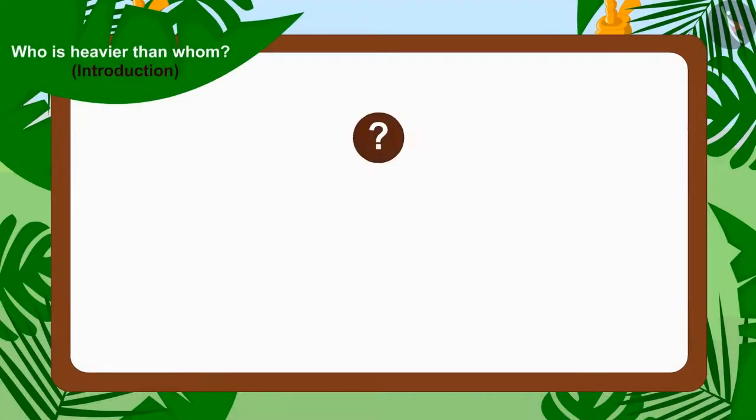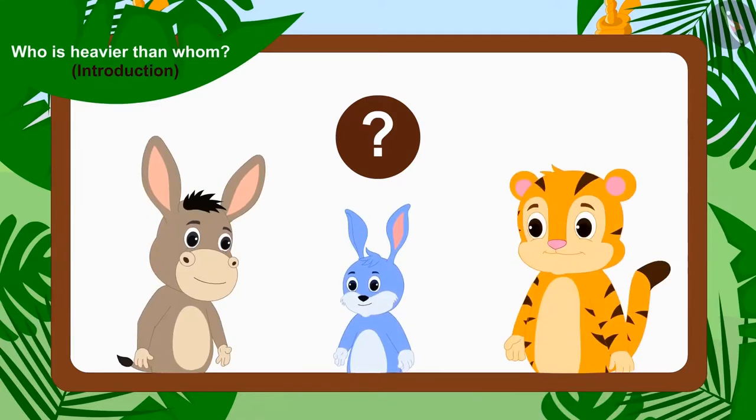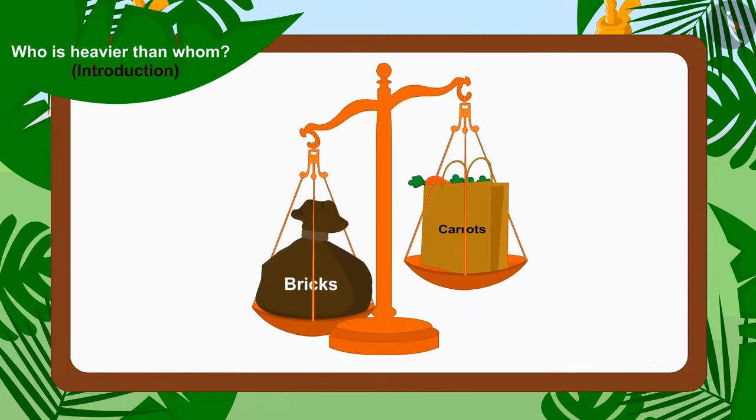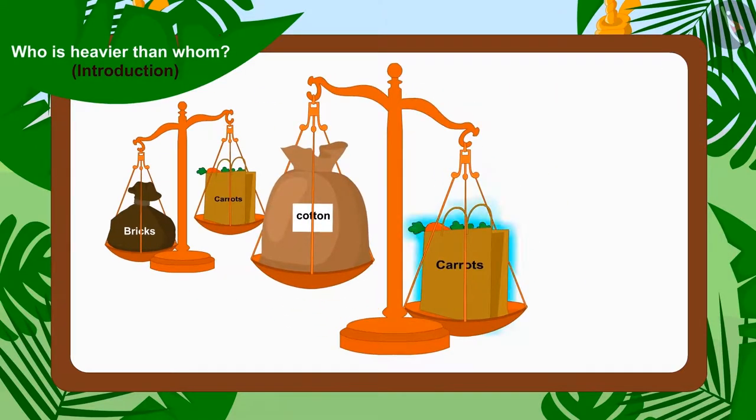Children, can you tell who will be the winner? Because the sack filled with Shail Khan's bricks is heavier than Bunny's bag filled with carrots, and Bunny's bag of carrots is heavier than Bhoola's sack of cotton.